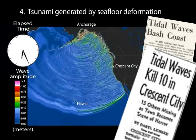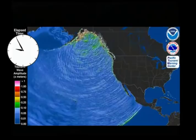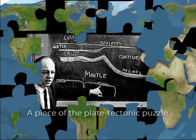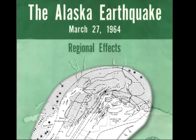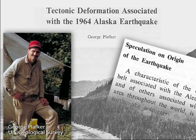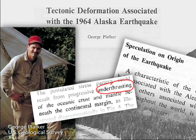In the early 1960s, plate tectonic theory was in its infancy, and subduction was poorly understood. Soon after the earthquake, measurements of land and seafloor deformation taken by United States Geological Survey geologist George Plafker and coworkers led them to propose that underthrusting of the Pacific Plate beneath Alaska caused the earthquake. This discovery helped establish subduction of oceanic plates beneath continental plates and megathrust earthquakes as fundamental processes of plate tectonics.